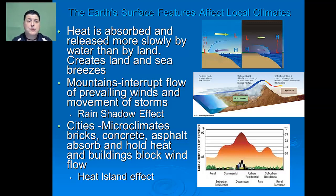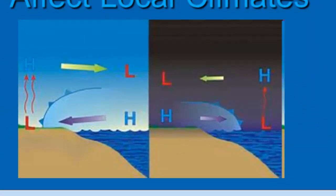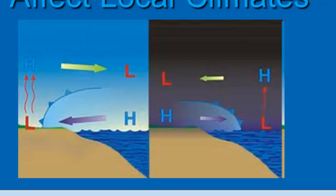The Earth's surface features can affect local climates as well. For example, heat is absorbed and released more slowly by water than by land, which creates land and sea breezes. During the day, the Earth warms much faster than the water. As a result, we get quite a bit of evaporation from the Earth, creating a low pressure zone. High pressure air moves from the ocean towards the land, creating cool sea breezes. At night, the opposite is true since the ocean is warmer because it holds onto its heat from the day. Warm air rises into the atmosphere creating a low pressure zone, and then high pressure air from the land moves towards the ocean, creating a land breeze, helping to regulate the area near the ocean and keeping it cool.